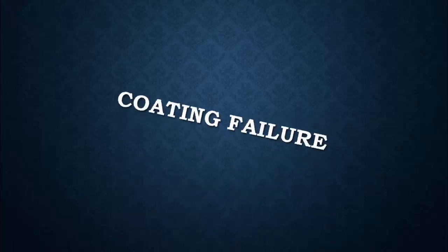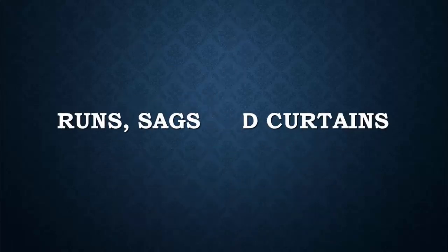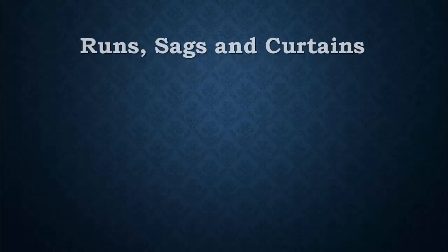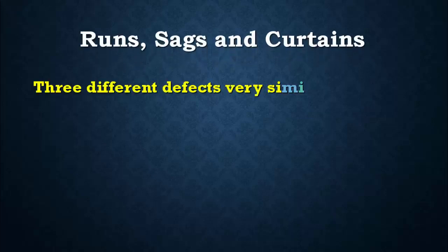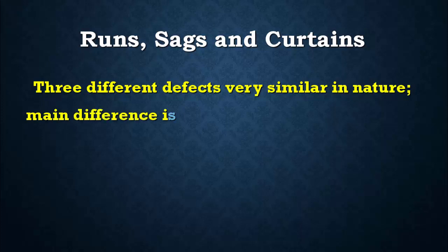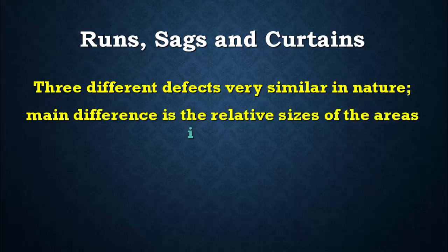Coating Failure: Runs, Sags, and Curtains. These are three different defects, very similar in nature. The main difference is the relative sizes of the areas involved.